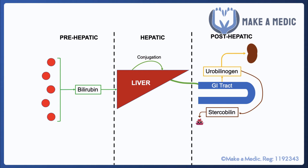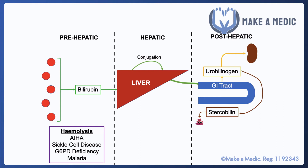Based on this diagram, we can figure out what causes a high level of bilirubin in the blood, which is what jaundice is. Pre-hepatic jaundice is essentially anything that increases the breakdown of red blood cells, including autoimmune hemolytic anemia, sickle cell disease, G6PD deficiency, and malaria, among various other causes.